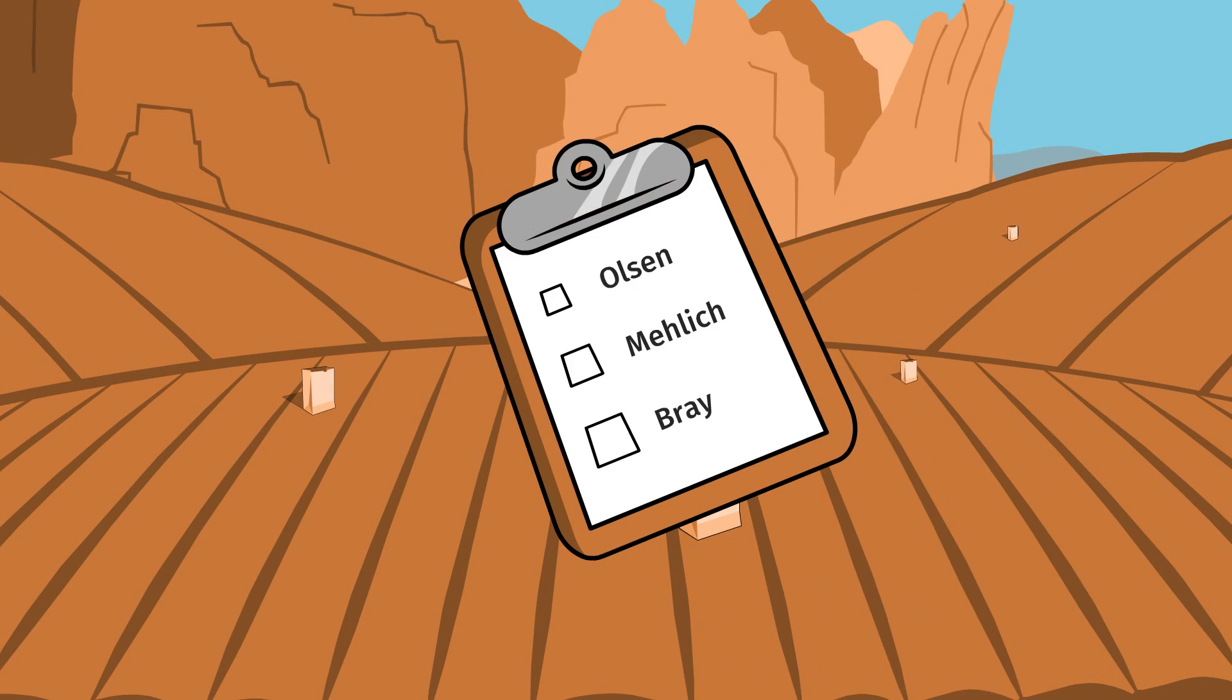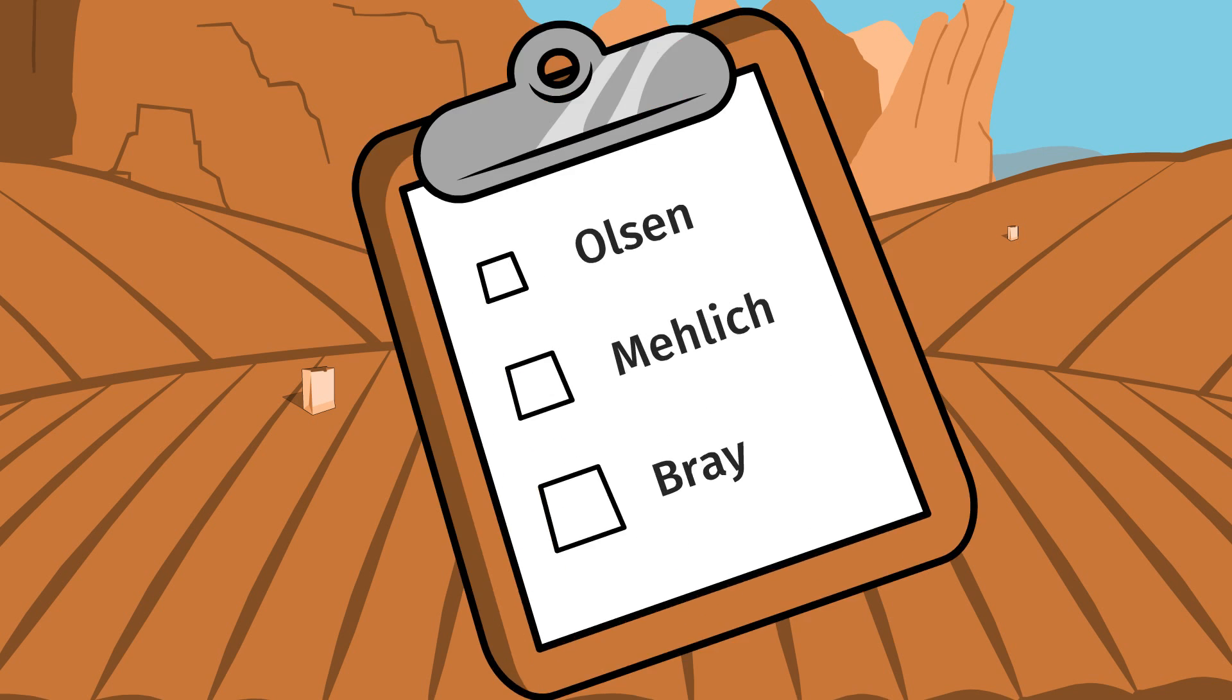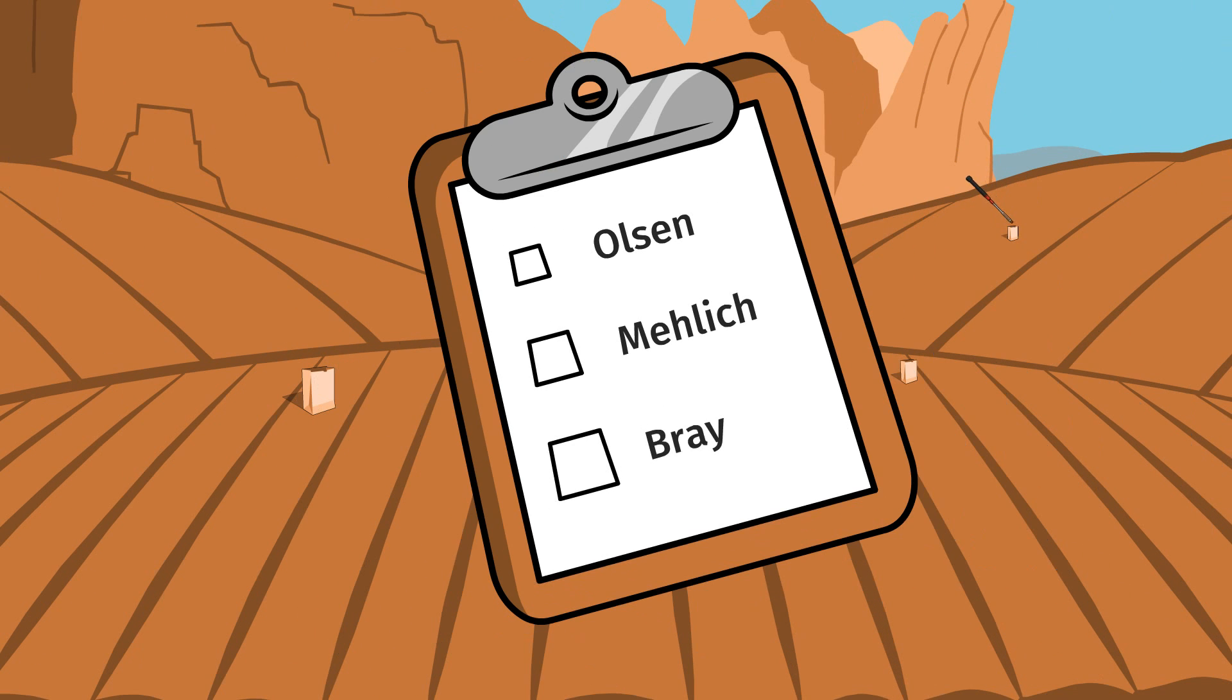If you don't specify the Olsen test, the lab may use the Malik or Bray methods, which overestimate phosphorus available to the plant in arid soils.